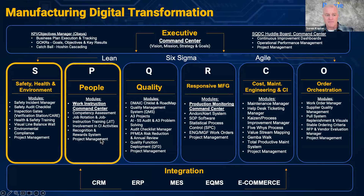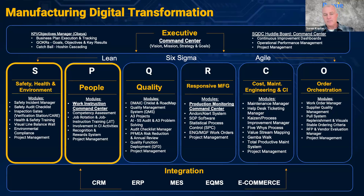Then you've got the people side of things. You want to look at work instructions, making sure everybody knows what they're doing. You want to look at job competency assessments, rotation management, and just-in-time training. A lot of the e-learning that we are doing these days can be connected right to that manufacturing line or point of work. So you've got people as well in terms of the focus of transformation.